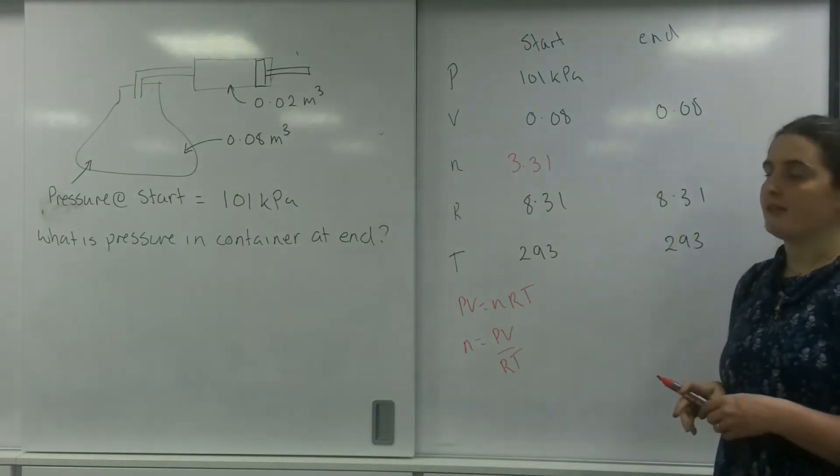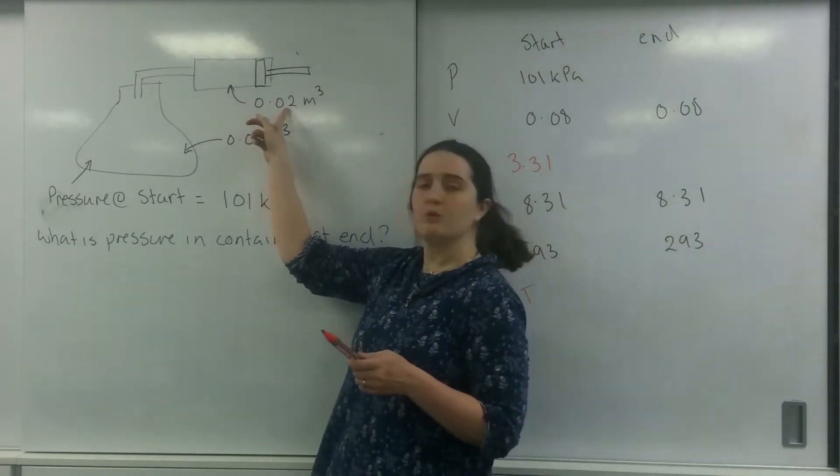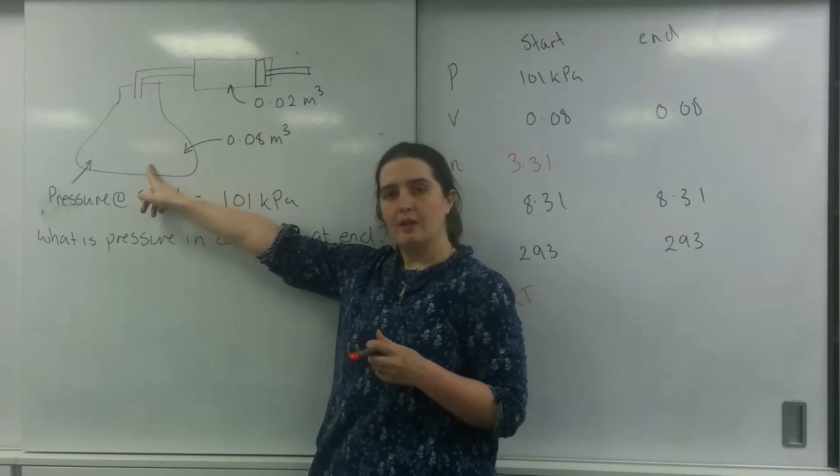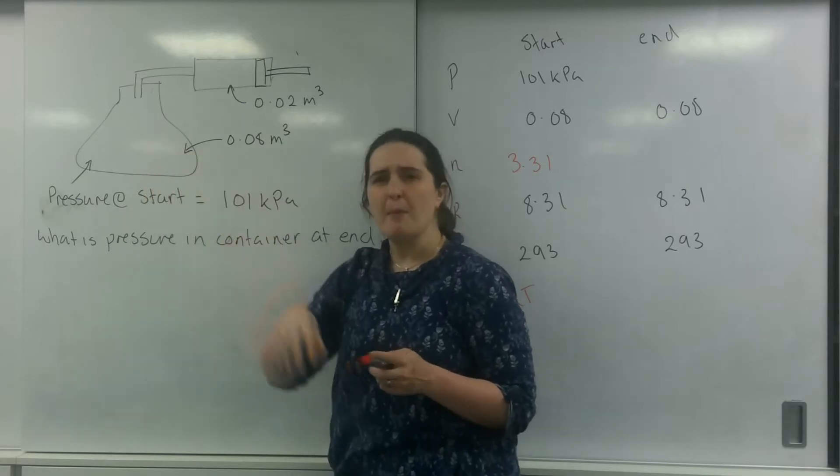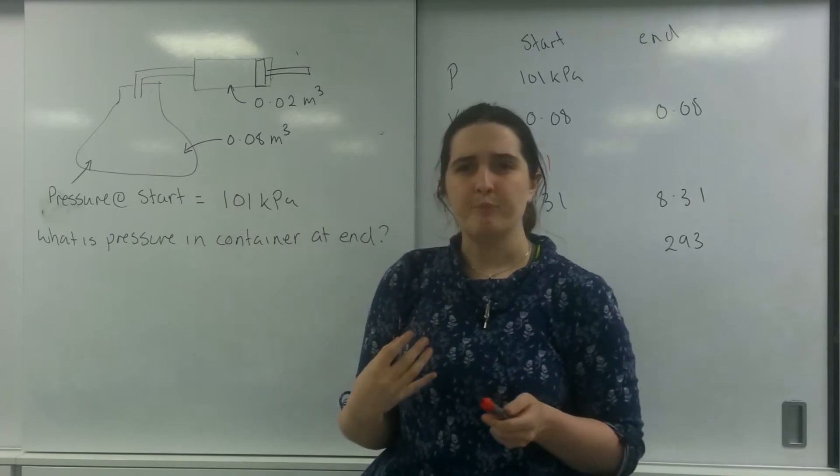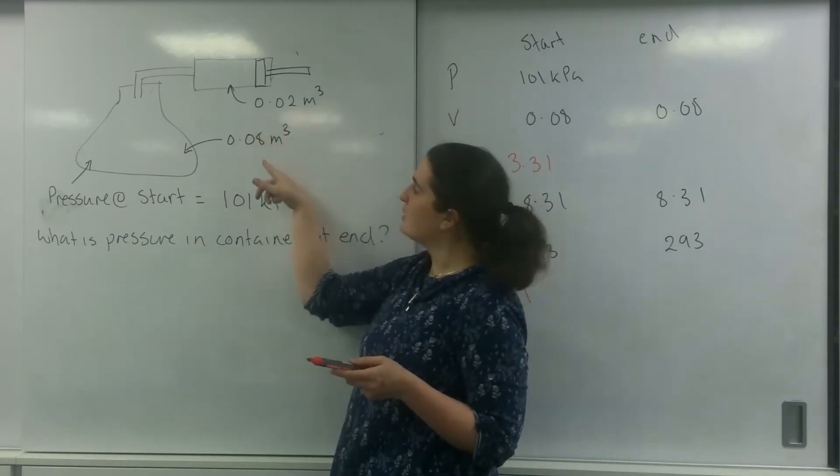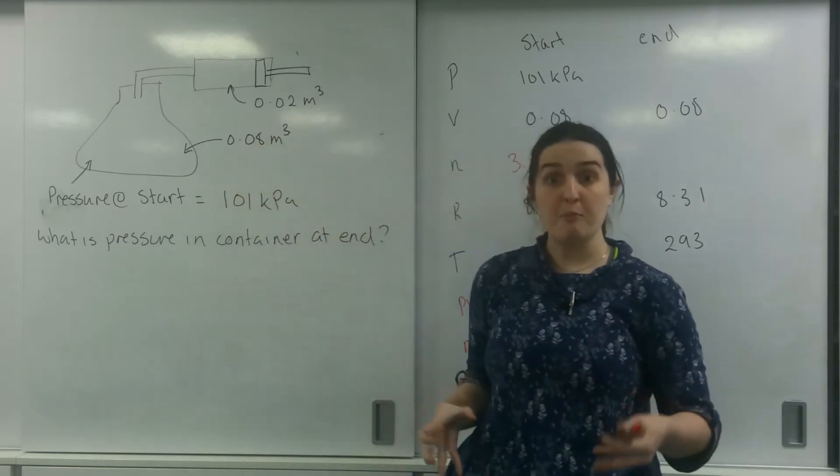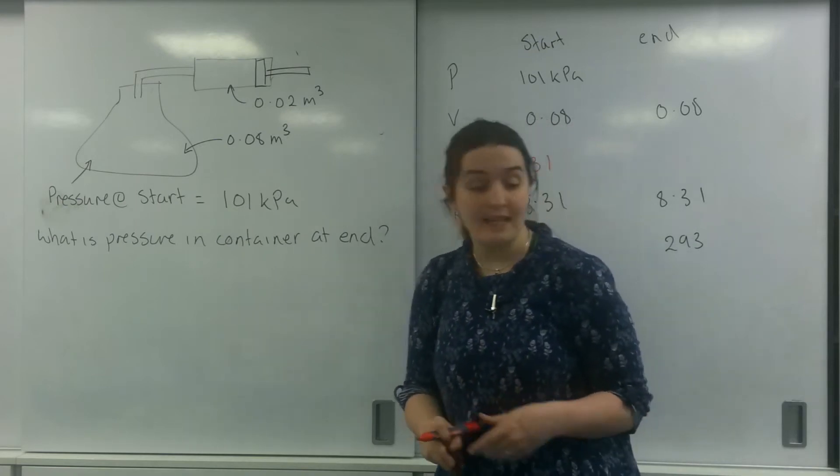Now this is interesting. I am now going to inject 0.02 meters cubed into this container. The volume is not going to change of this beaker, but the number of gas particles will. So this here, this 0.02, is 25% of this here. So I'm going to increase the number of particles I have in my flask by 25%.